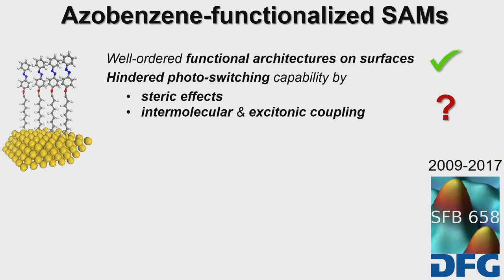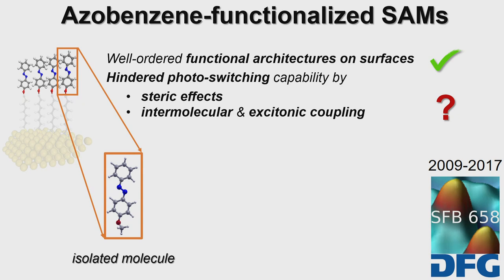These are fascinating systems because they are well-ordered functional architectures on surfaces. They can be deposited, controlled, monitored, and probed. However, it was realized that these systems, especially when closely packed on the surface, have hindered photo-switching capabilities. This is a huge drawback if you want to use this system as photo-switches. In the first experimental papers, this was ascribed to steric effects and very strong intermolecular and excitonic coupling. But the reason for these effects was not really well explained.